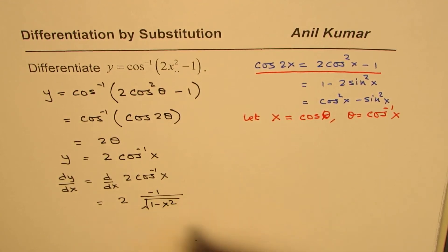And the derivative of cos inverse x is minus 1 over square root of 1 minus x square. So we get our result as minus 2 over square root of 1 minus x square.